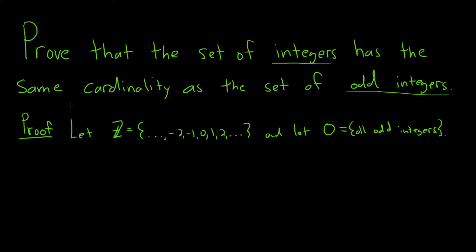So the natural thing to do now is think about how we can write an odd integer. Odd numbers can be written as 2n plus 1. So we'll define our function as follows. Define f from Z into O by f of n. So it takes an integer and sends it to an odd one. So 2n plus 1.